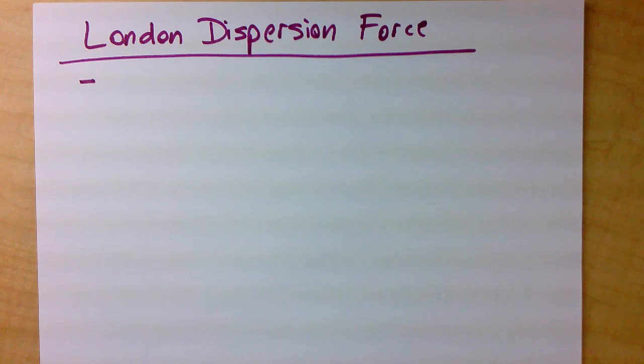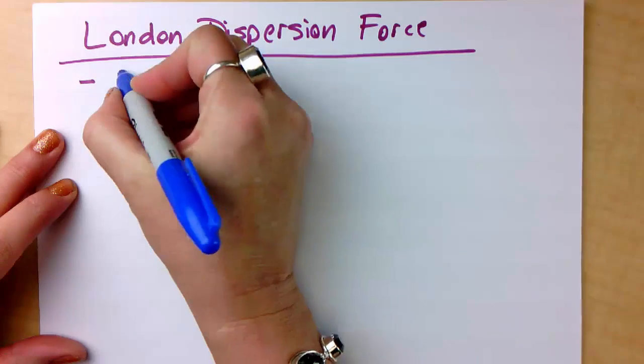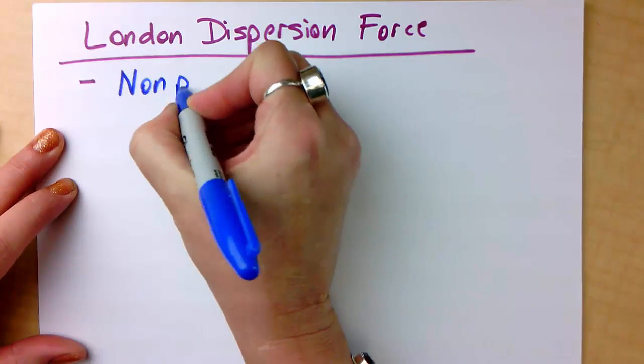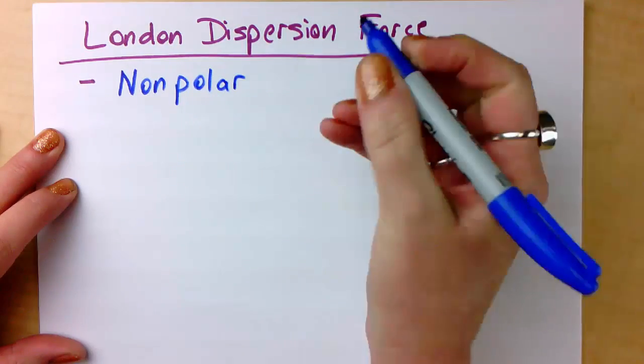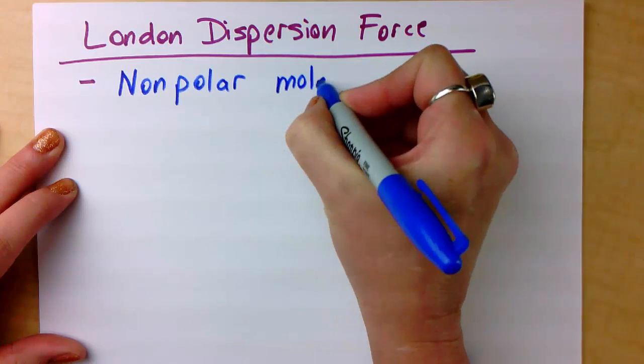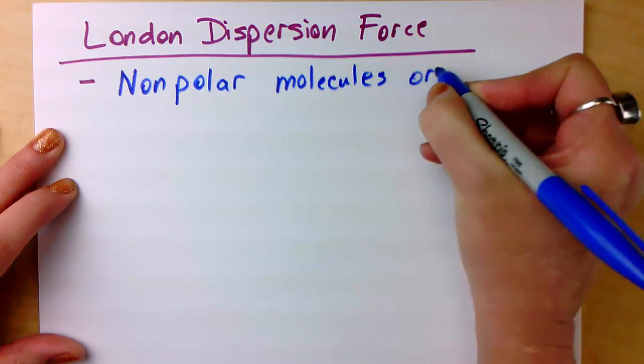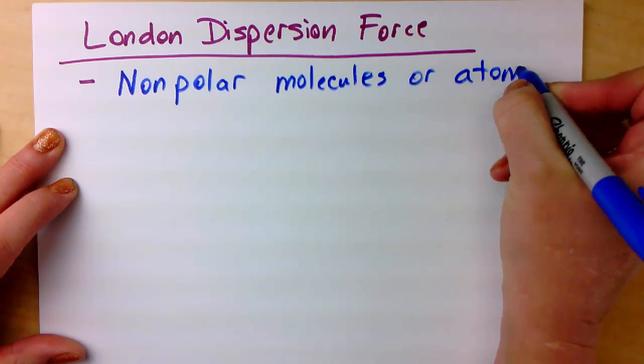First of all, species that exhibit London dispersion forces are nonpolar, such as nonpolar molecules or atoms.